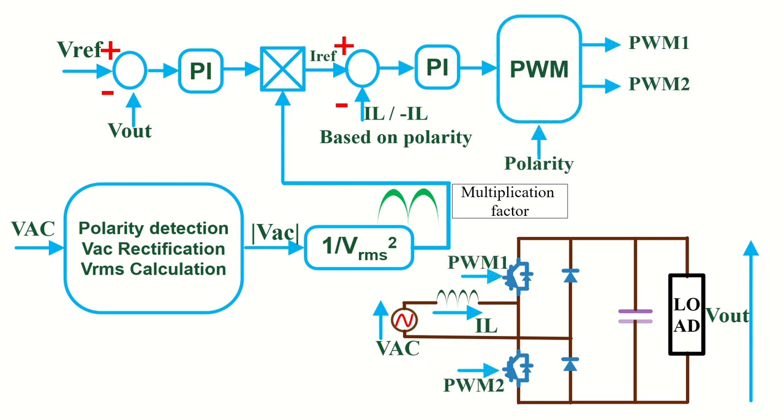Now finally generate the PWM signals based on the output of the current controller. Here also we need to consider the polarity of AC input voltage, since the duty ratio D of the high frequency switches are different during positive and negative half cycles.